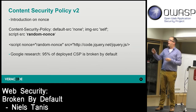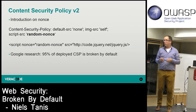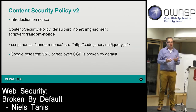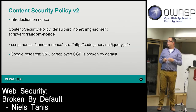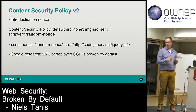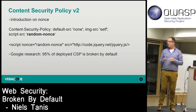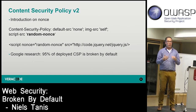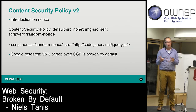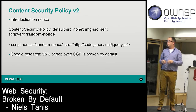In CSP version 2, the random nonce is defined and the script source will load only if the nonce matches. You have control over which files are loaded. But there's still a problem: if you load jQuery from a CDN and that script internally loads another file, the internals of that script have no knowledge of the nonce, so the second file won't load.